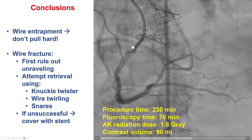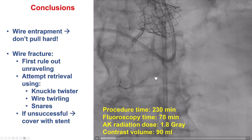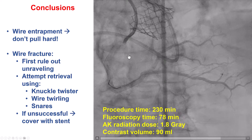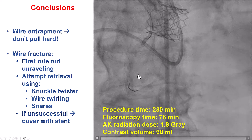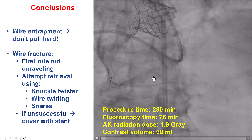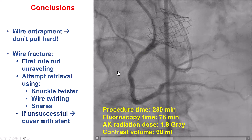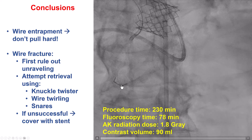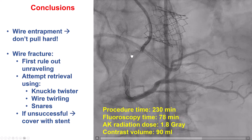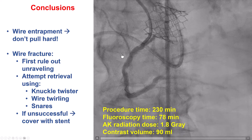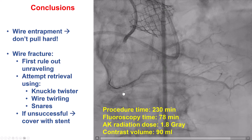To summarize: when there is wire entrapment, it is very important not to pull hard because this can fracture the wire. In our case, we advanced the microcatheter — a balloon could work as well — all the way to the area where the wire was entrapped. However, the wire was likely already kinked, which is why it fractured. If the wire fractures, the next question is whether it has unraveled, how much fragment remains, and whether it is protruding into the aorta. The way to determine this is by intravascular ultrasound — in our case, there was no unraveling, just a 3 cm piece of wire in the vessel.